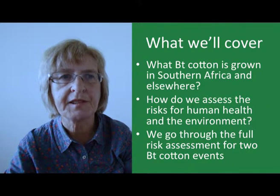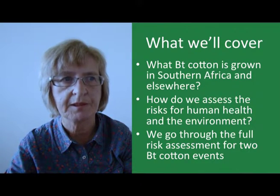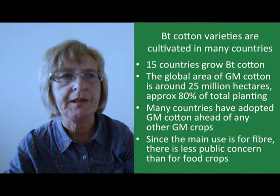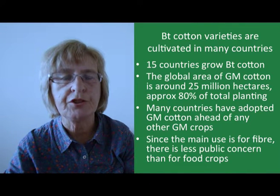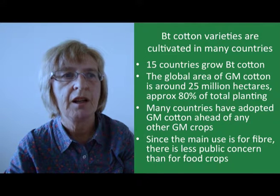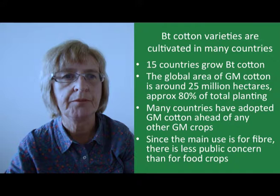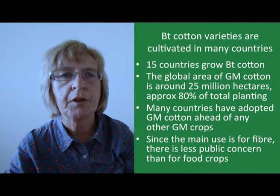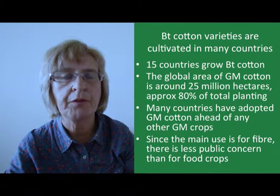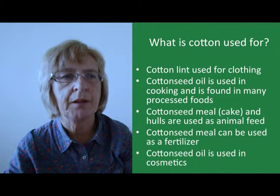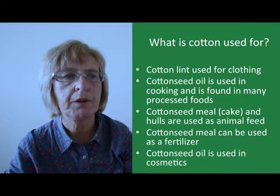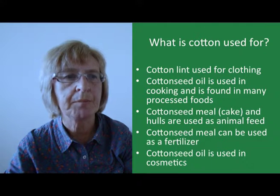We'll then go through the full risk assessment for two particular BT cotton events as examples. Many different types of BT cotton are cultivated around the world in at least 15 countries. The global area of GM cotton is around 25 million hectares, representing about 80% of the total cotton grown. More countries have adopted GM cotton than any other GM crop, mainly because the primary use is for fibre rather than food or feed, so its introduction has been less controversial.